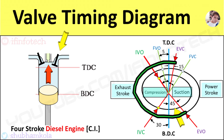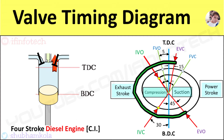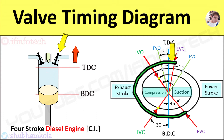Near the end of the power stroke, the exhaust valve opens at an angle of 45 degrees before the BDC position of the piston. This suddenly brings the cylinder pressure to atmospheric pressure and exhaust gases leave the cylinder at constant pressure. The exhaust valve then closes at an angle of 15 degrees after the TDC position of the piston.